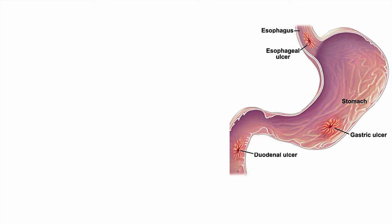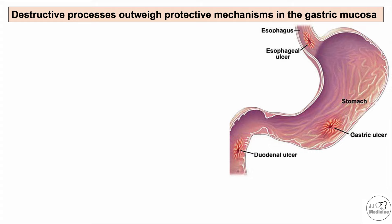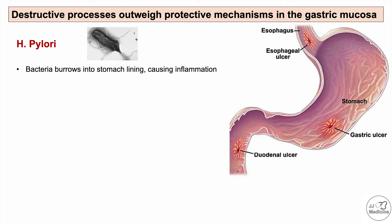An ulcer forms because destructive processes outweigh protective mechanisms in the gastrointestinal mucosa — whether in the stomach, esophagus, or duodenum. The most common cause is Helicobacter pylori infection. The bacteria burrow into the stomach lining, causing inflammation, and this prolonged inflammation increases destructive processes such that protective mechanisms cannot compensate, leading to ulceration.